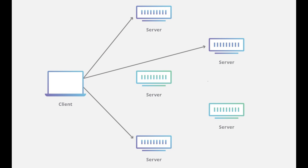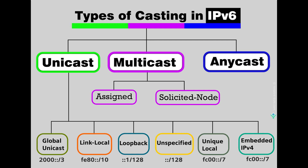Multicast has the same concept in IPv4 and IPv6, but in IPv6 it has assigned and solicited node multicast. In IPv6, for every multicast address a host has, it must join a solicited node multicast group, which represents an address valid only within the local link. IPv6 multicast addresses start with 'ff'.